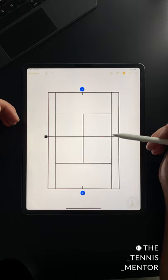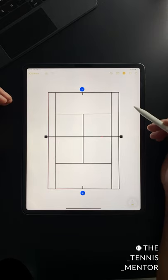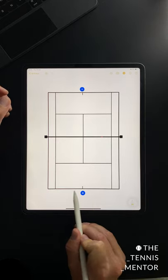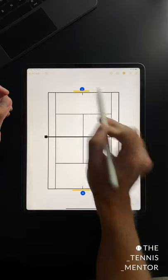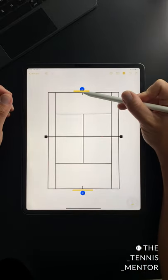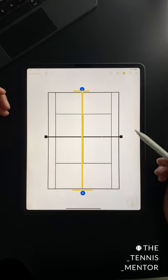Generally when you're trading from the back of the court in a neutral situation with both players hitting a quality ball, you're going to be positioned somewhere just behind the baseline as is your opponent. You can imagine that there's a rope between the two of you, just like a tug of war.